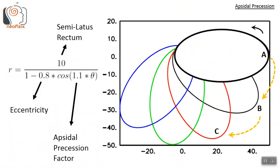We know that Kepler-Newton type two-body systems have elliptical orbit solutions. That is, it forms a closed ellipse — if it starts from point A, then it returns back to the same point A.